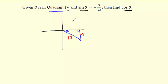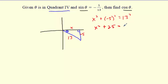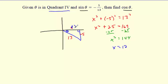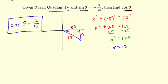Using the Pythagorean theorem: x² + (-5)² = 13², so x² + 25 = 169. Subtract 25: x² = 144, so x = 12. The missing side is 12. Now cosine of theta is adjacent over hypotenuse: 12 over 13. I never actually found the angle, but I found the cosine.